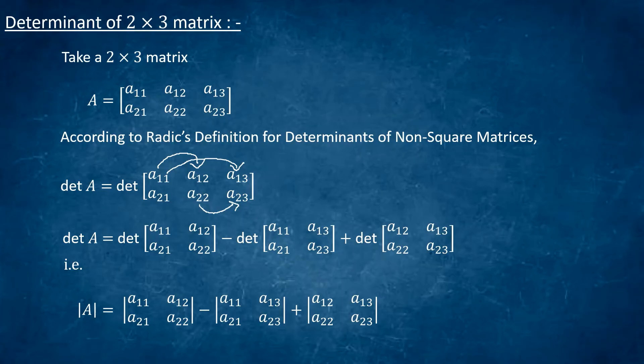Let's take a simple 2×3 matrix of the form A equal to [1, 2, 3; 4, 5, 6], which is a 2×3 matrix. Its determinant will be equal to the determinant of [1, 2, 3; 4, 5, 6]. Now we apply Roddick's definition.